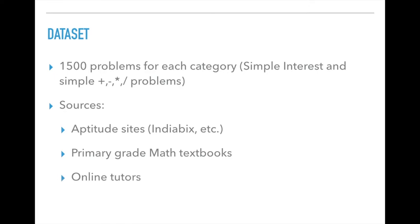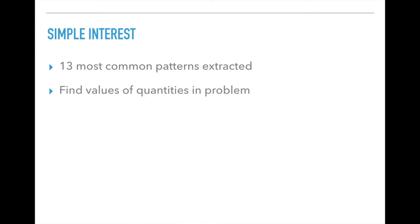Next, I detail how we solve various categories of problems. The first is simple interest. First, we found the 13 most common categories of problems using the natural language toolkit or NLTK for short. The next step was to find all the quantities in the problem which was accomplished using spaCy and industrial level NLTK toolkit.